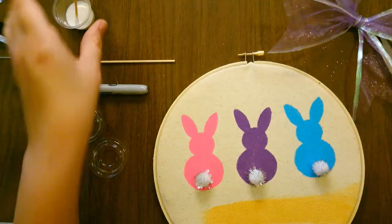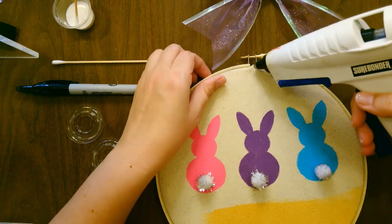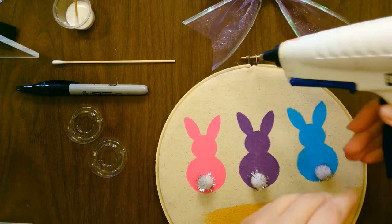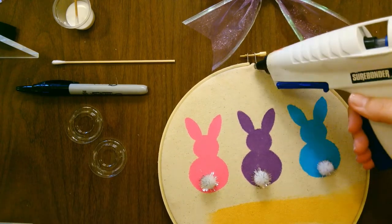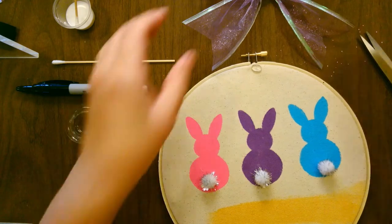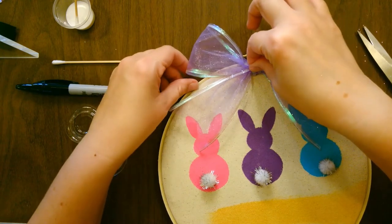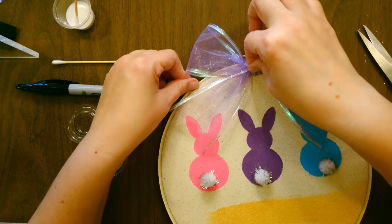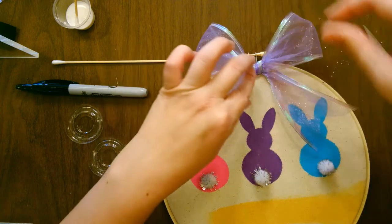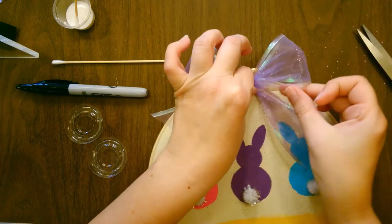And again, you can use your tacky glue. For quickness sake, I'm just going to use a little hot glue right here. Put it right at the top. At this point, you can further adjust your ribbon if you'd like.